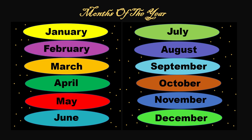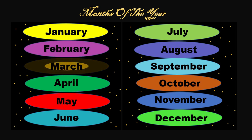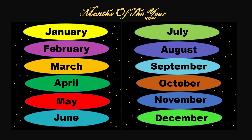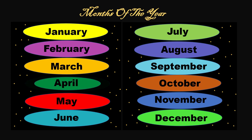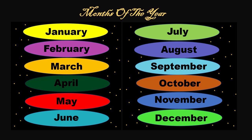The second month is February — F-E-B-R-U-A-R-Y — February. The third month is March — M-A-R-C-H — March. The fourth month is April — A-P-R-I-L — April. The fifth month is May — M-A-Y — May.